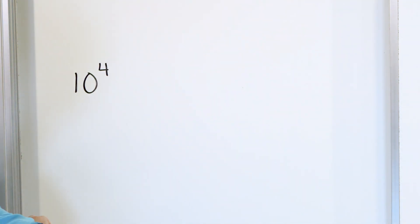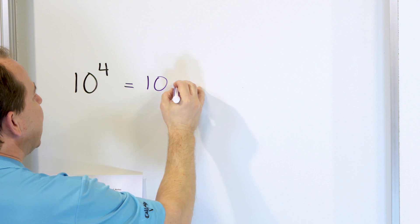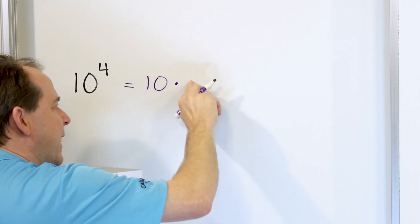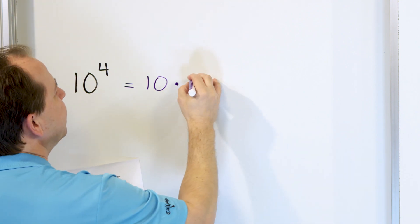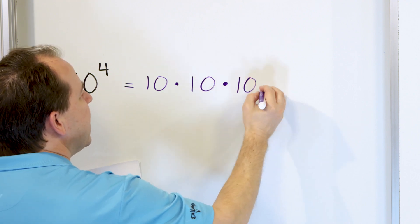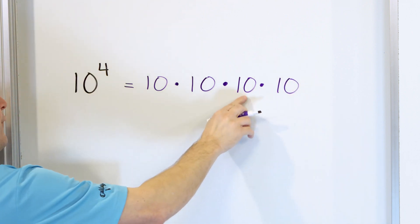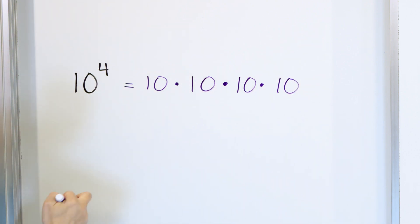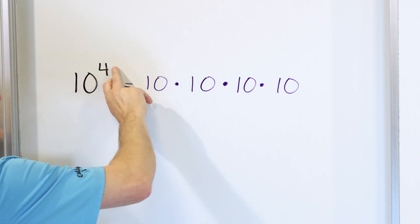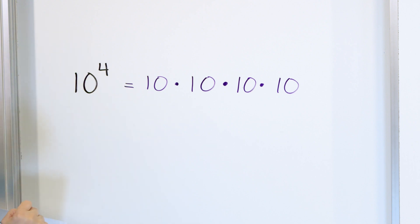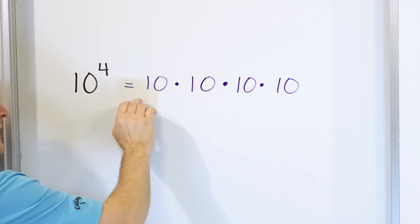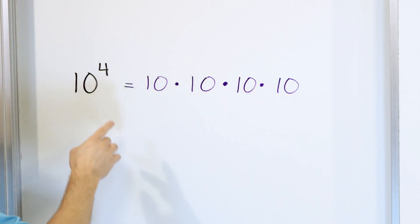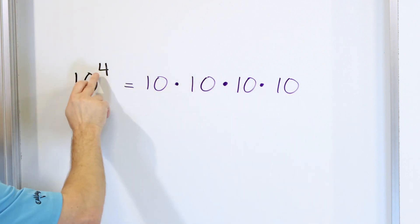So when we have 10 raised to the power of 4, what it actually means if you write it all out is 10 times 10 times 10 times 10. I'm going to use a dot for the multiplication — I'm not going to use the x anymore because we're going to be using x for other things. Notice that I have four 10s on the board because the exponent is a 4. You take the bottom number and multiply it by itself that many times.